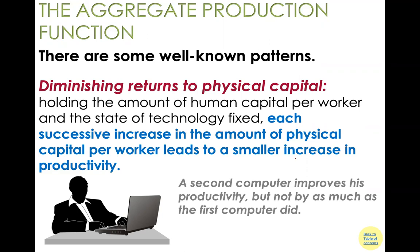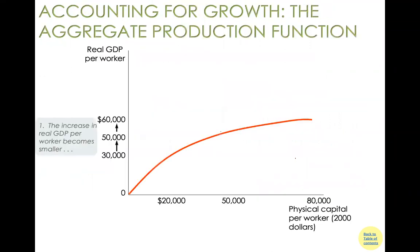Another example: a person without a car must rely on public transportation, walking, or bicycles. A car improves mobility significantly — you can do more and go further. However, a second car adds very little to your productivity. The marginal gain from the second car is minor — this also reflects diminishing returns to physical capital.